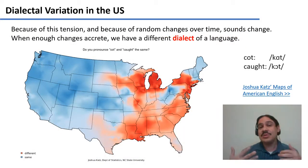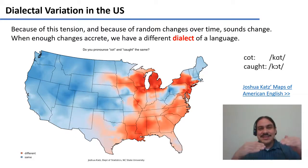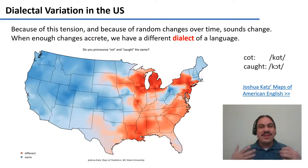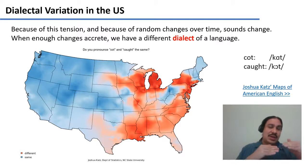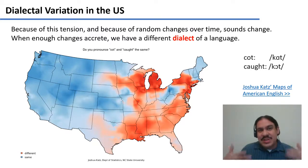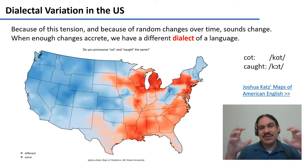In week three, we saw how this process, if you fast-forwarded a thousand years, could eventually lead to different languages. Here we're going to fast-forward only 50 or a hundred years. With enough time and enough of these changes — which can be due to in-group/out-group tension but also random changes over time — enough changes are going to accrete that you're going to end up with different dialects of a language.